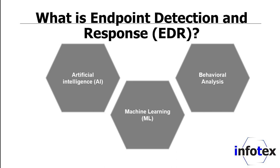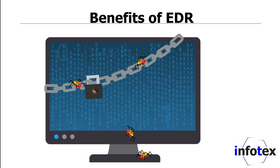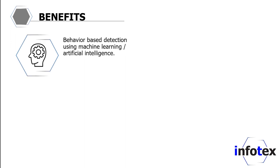Taking those data points used in machine learning, EDR determines if something is normal behavior or abnormal behavior. For example, if a user that only touches 10 specific files a day is now touching thousands of files a day, then obviously that is something a good EDR is going to alert you to. So talking more about these benefits: behavior-based detection, machine learning, and artificial intelligence are big pieces of the EDR puzzle.